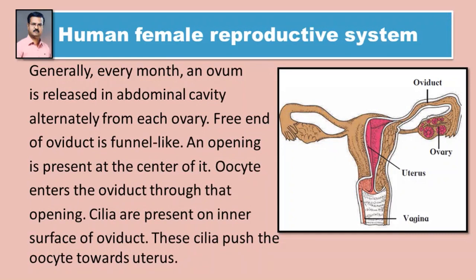Generally, every month an oocyte is released into the abdominal cavity alternately from each ovary. The free end of the oviduct is funnel-like. Saadharanpane pratyek mahinyaala ek andapeshi aali paline eka eka andashayatun udar poklat made sodi jaate. Andanalikecha tokache bhaag narsalyaa sarkha asto.